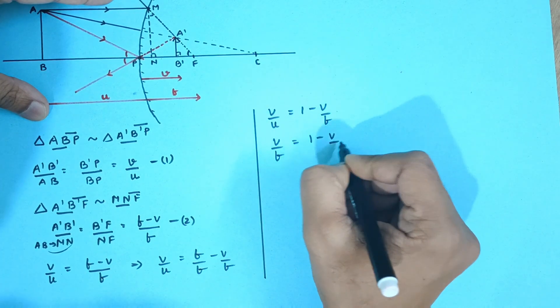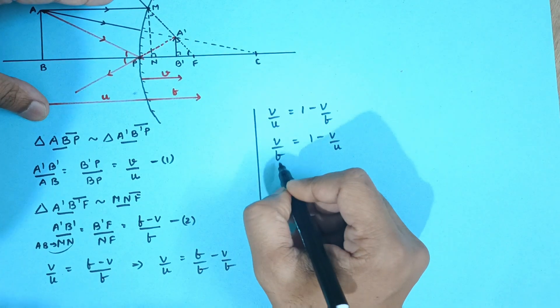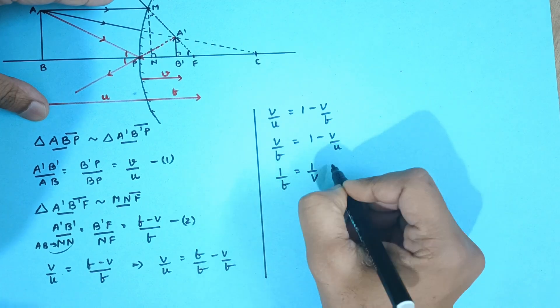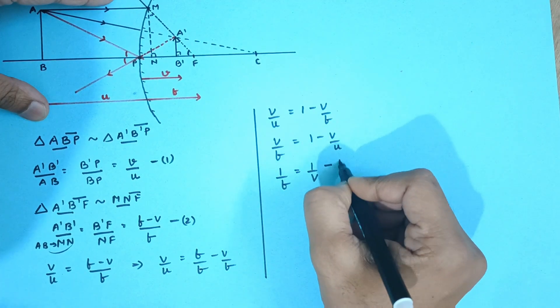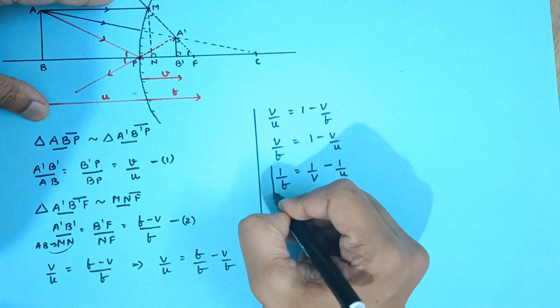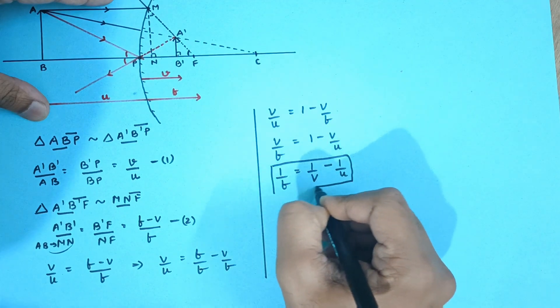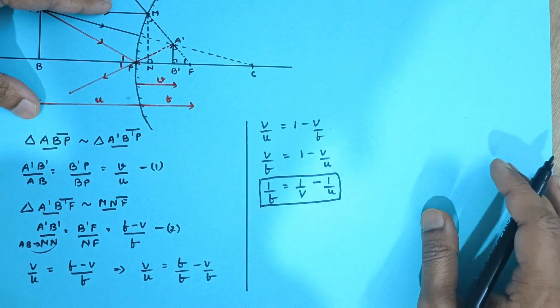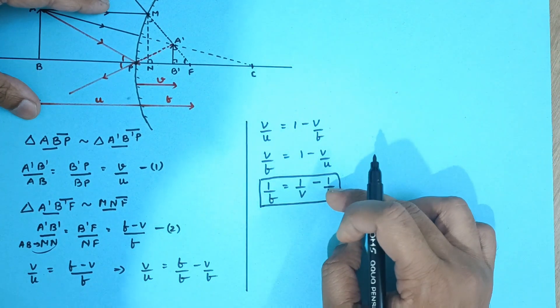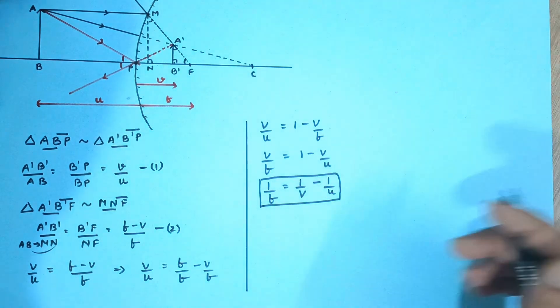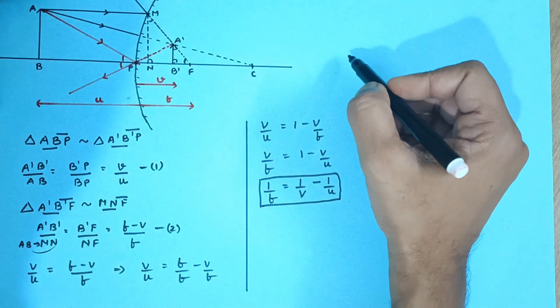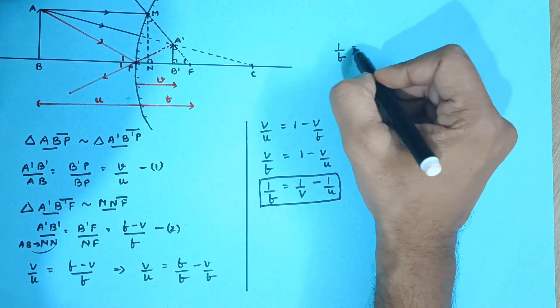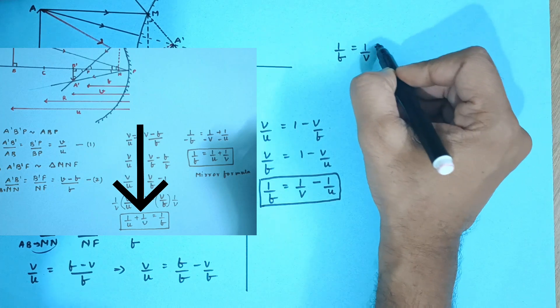Now I am going to divide both sides by V. So 1 upon F that is 1 by V minus 1 upon U. So you can see here that this is the mirror formula without sign convention. And in the concave mirror without sign convention, the formula was 1 upon F that was equal to 1 upon V plus 1 upon U.